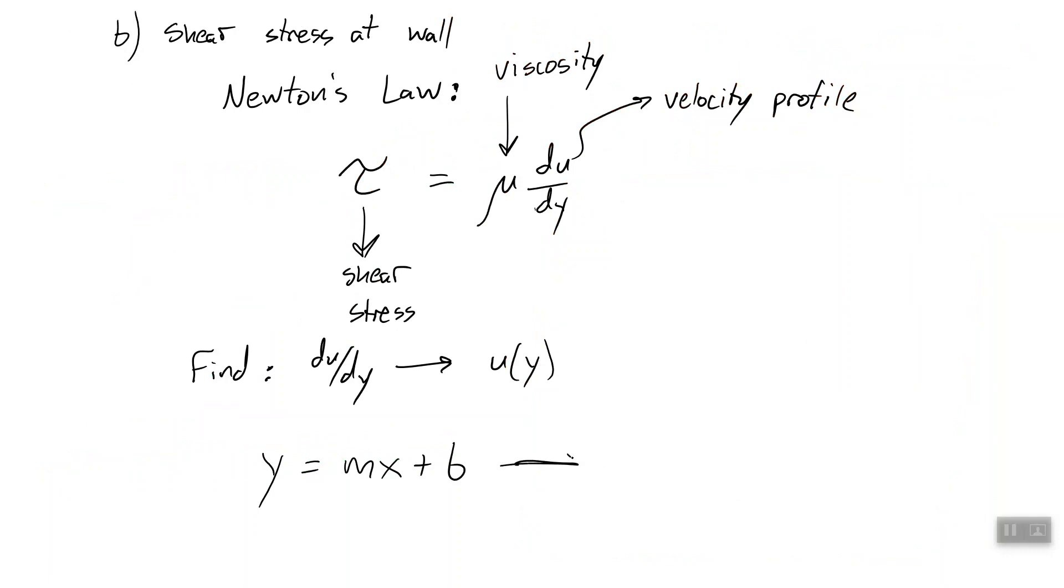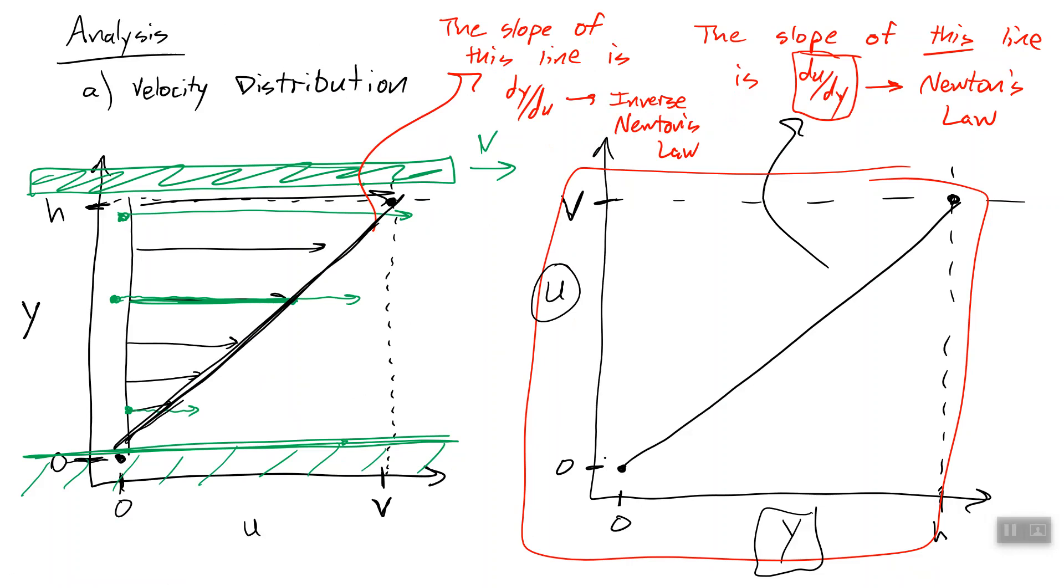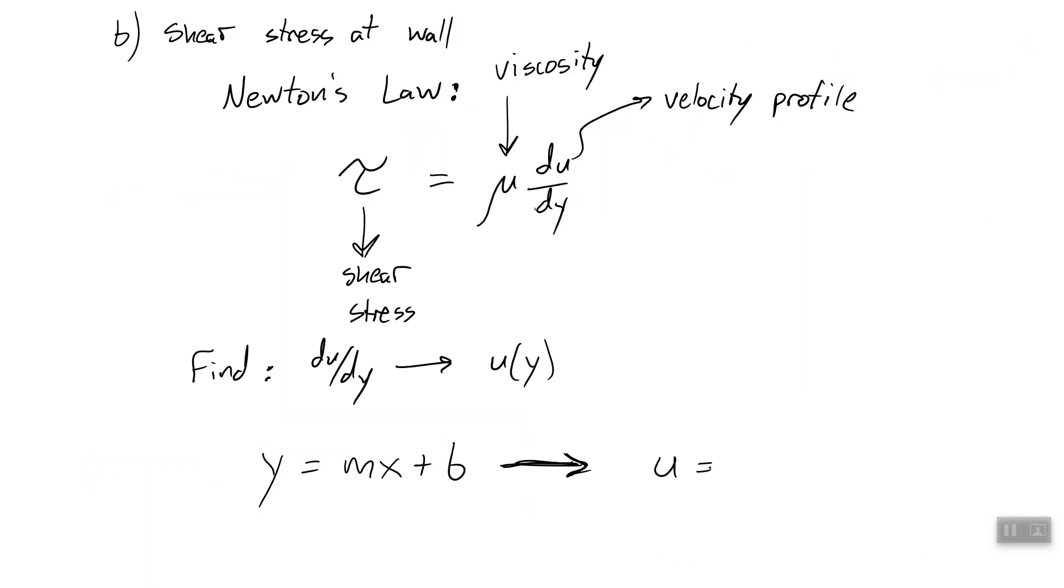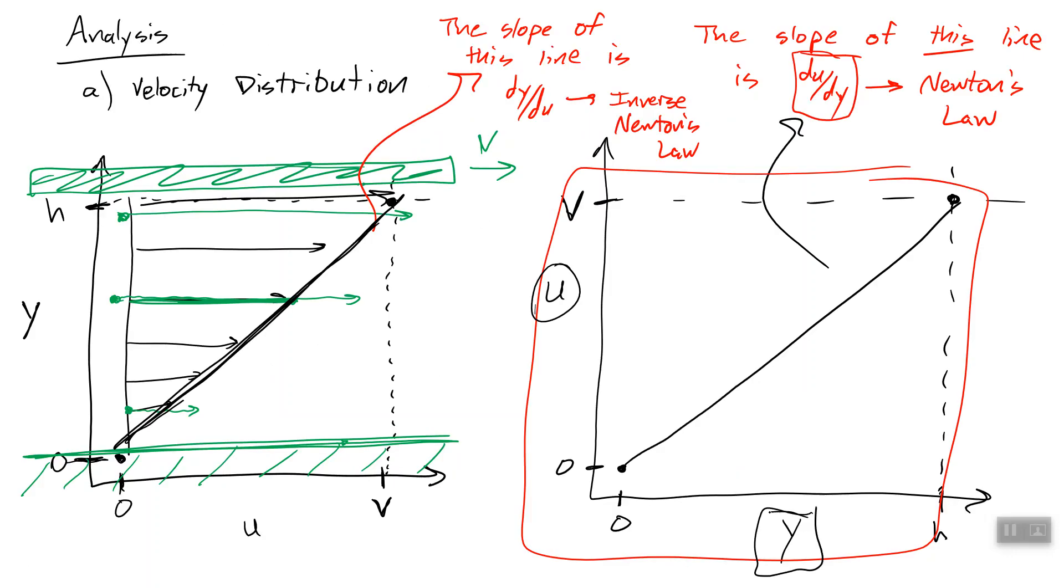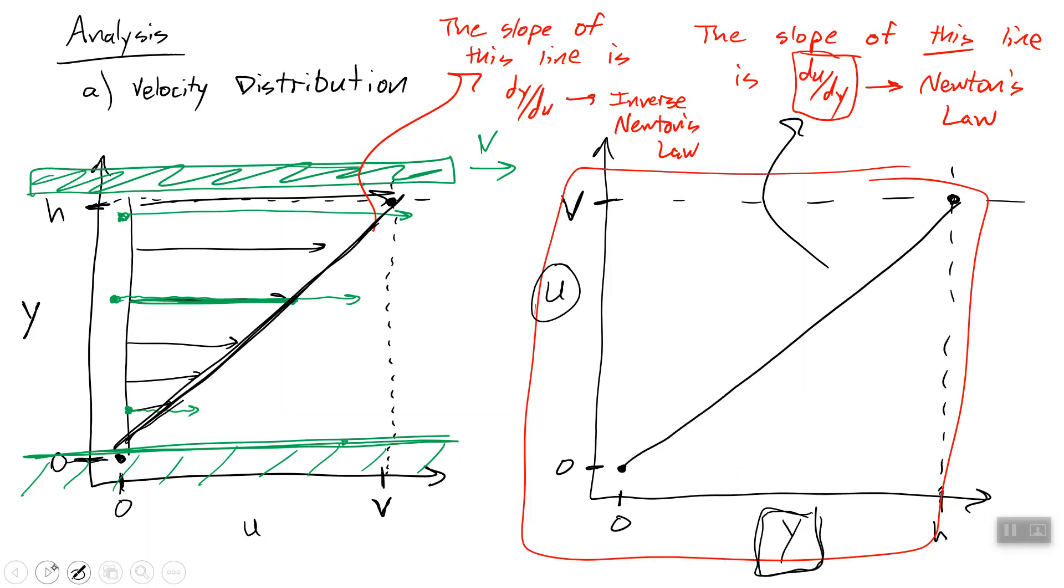So here's the function, our normal function of a line we learned in like fifth grade. I'm going to rewrite that using this plot. So y indicates the vertical axis, which in our case is u. So u equals the slope times x, which means the horizontal axis, which is actually our vertical dimension y, times y, plus our y intercept, our vertical intercept b.